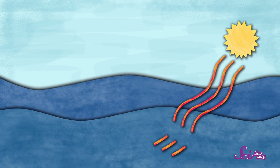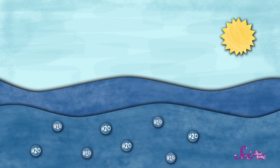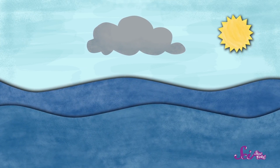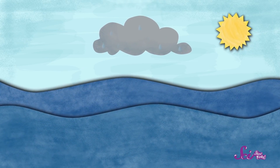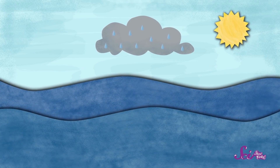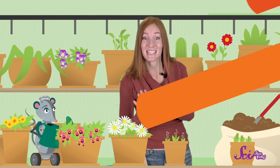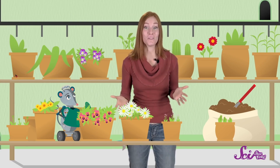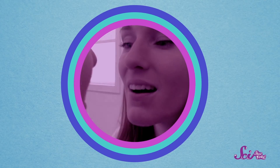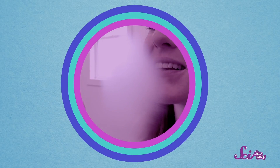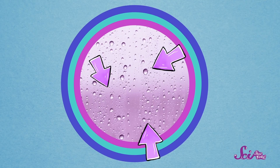The water vapor goes up very high into the sky, and it gets pretty cold up there. When the water vapor gets high enough, it starts to cool, and as it cools down, it changes back into little drops of liquid water. You can actually see water vapor change into water drops right at home — breathe out onto a mirror or window. The glass gets foggy because there's water vapor in your warm breath. When the water vapor touches the cool glass, it changes into tiny droplets, and a lot of droplets together make the glass look cloudy.